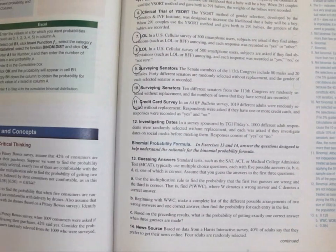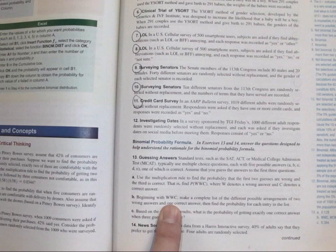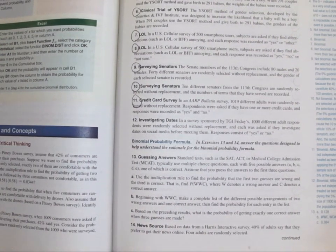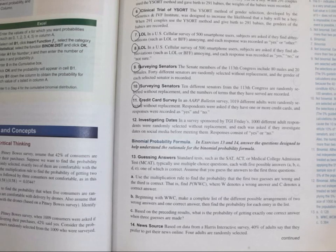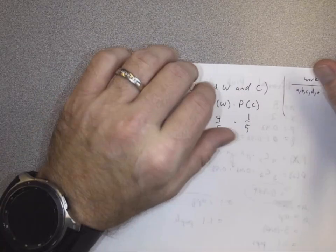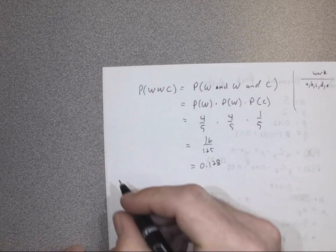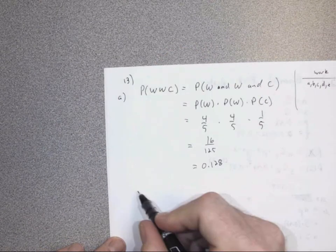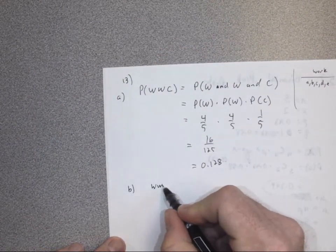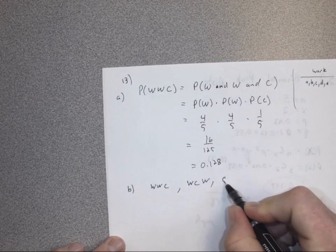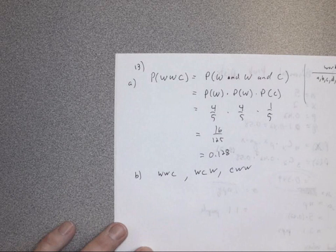Next, beginning with wrong-wrong-correct, find the complete list of different arrangements of two wrong answers and one correct answer. There's more than one way to get two wrongs and a right. You can do wrong-wrong-correct, wrong-correct-wrong, and correct-wrong-wrong. Those are your three different outcomes.